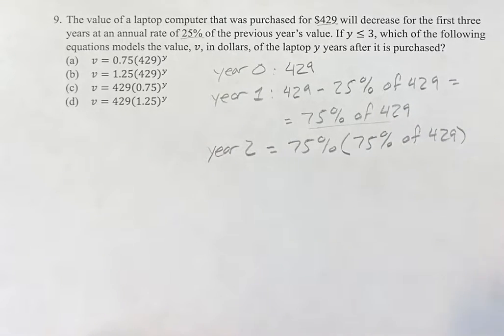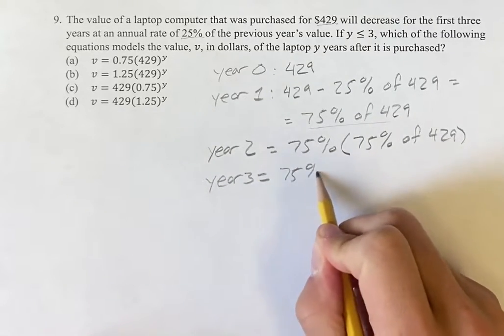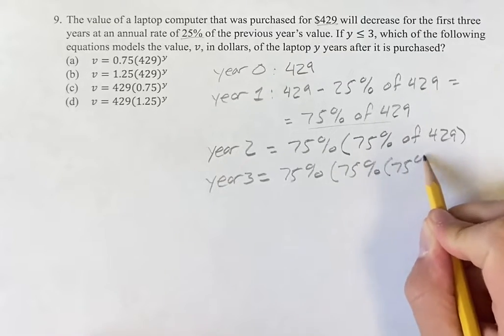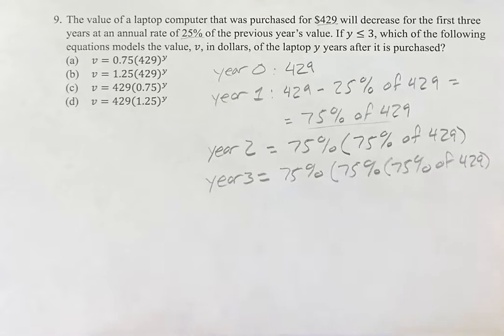And you can see where this pattern is going. Year three is going to be 75% of that. And so we're getting this chain where every time we go one year, we're multiplying by 75%.